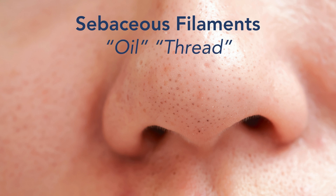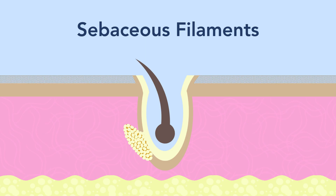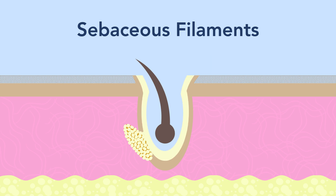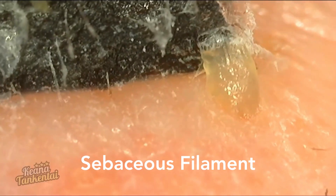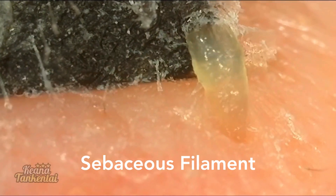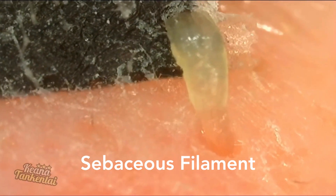This results from the anatomy of the oil gland — the oil coats the sides of the pore and goes out onto the top of the skin. Sebaceous filaments are a congealing of this oil. When pulled out, you can see it's kind of jelly-like and a little translucent.